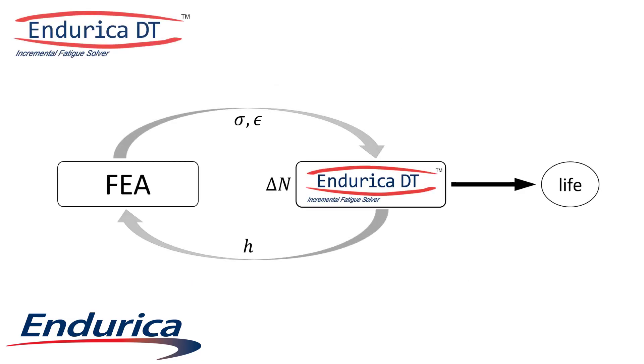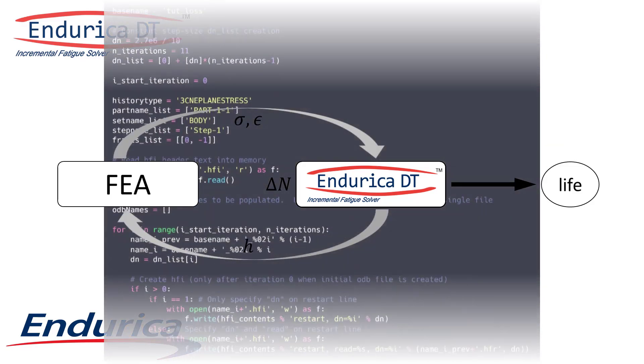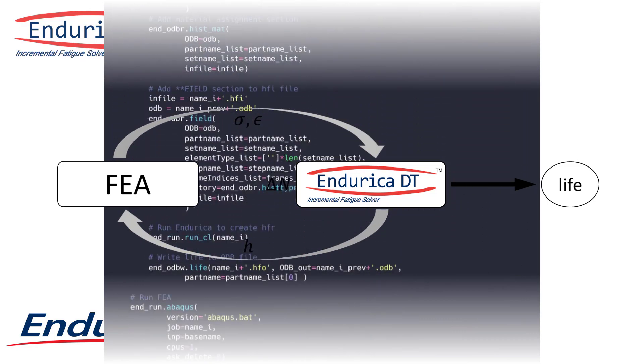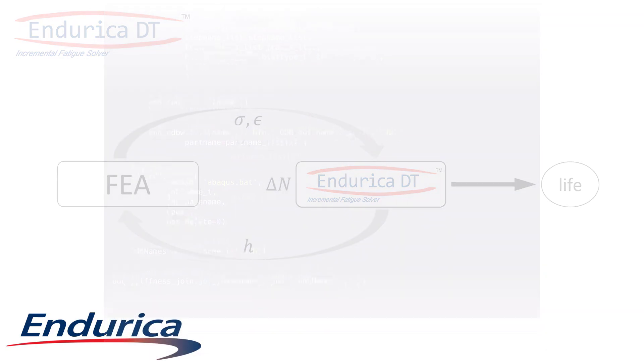If we use Endurica DT and the stiffness loss functionality, we can update the stiffness ratios and finite element models to account for stiffness loss. A small Python script is used to help tie this workflow together and pass the required information back and forth between the two applications.